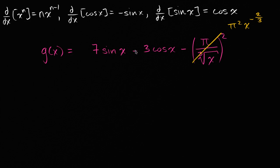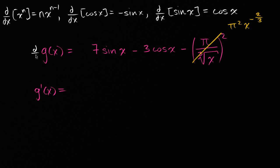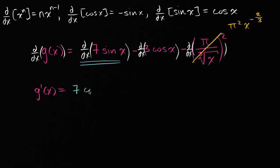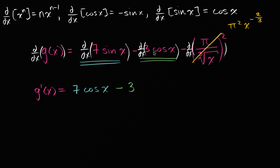Now let's take the derivative of each piece of this expression. So g prime of x is going to be equal to — we can apply the derivative operator to each term. The derivative of seven sine of x is seven times the derivative of sine of x, which is just seven times cosine of x. Then we're subtracting, so it's minus three times the derivative of cosine of x, and the derivative of cosine of x is negative sine of x.